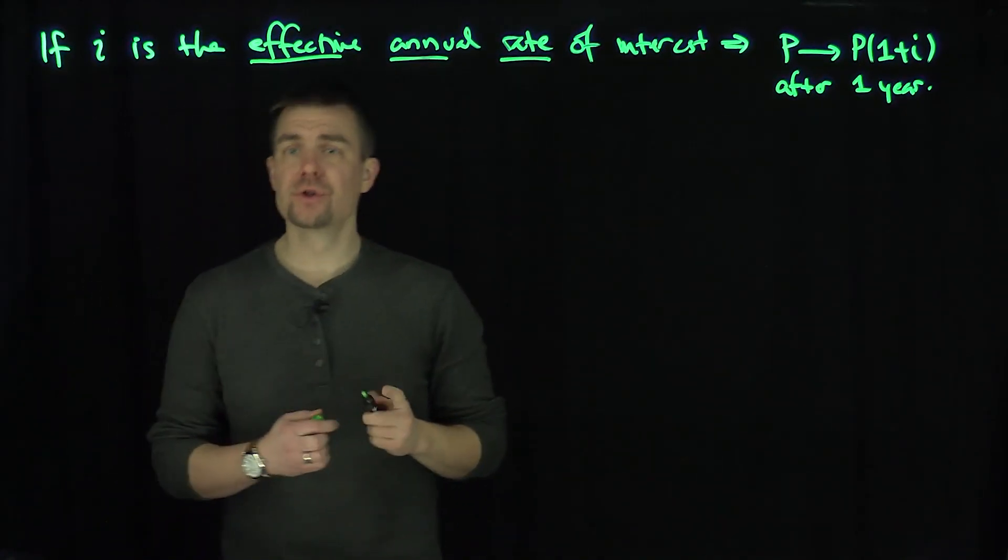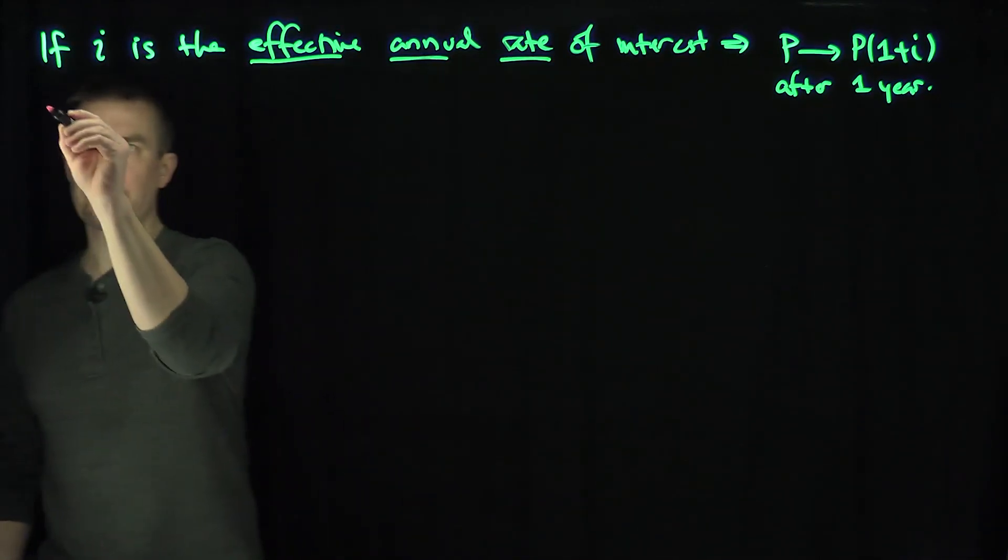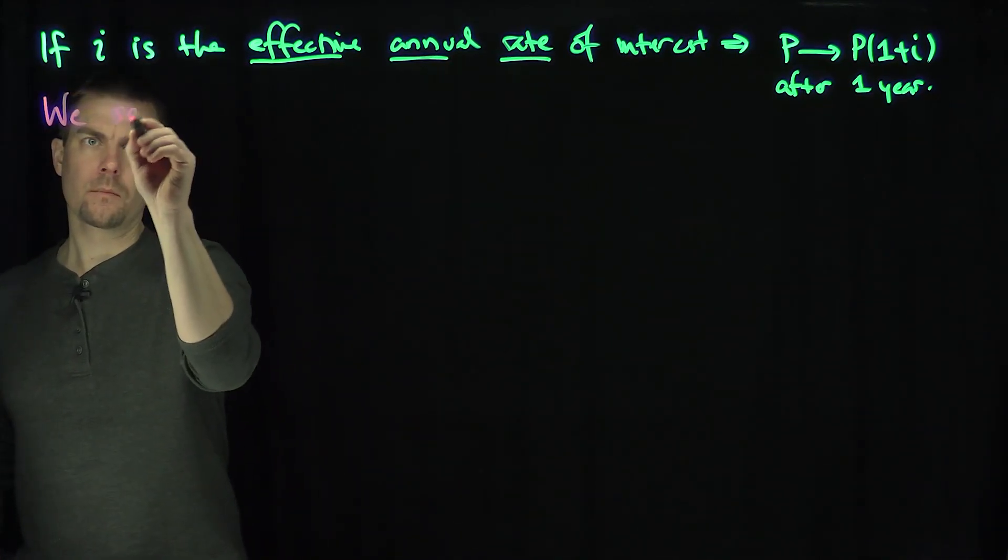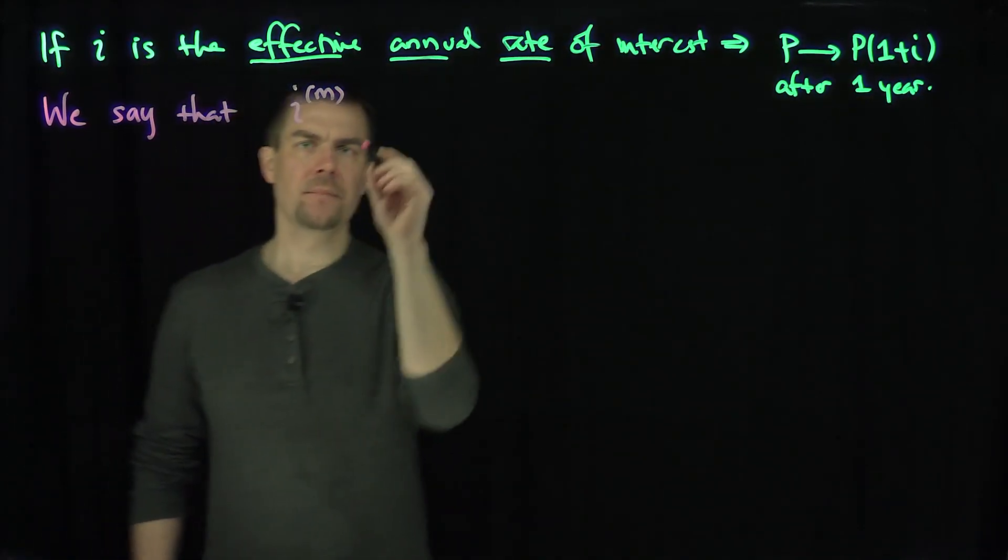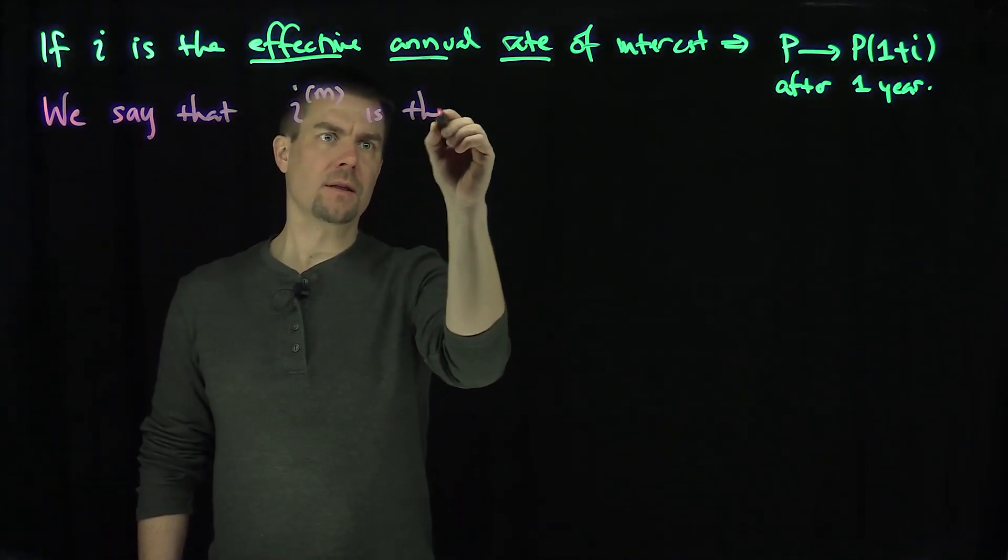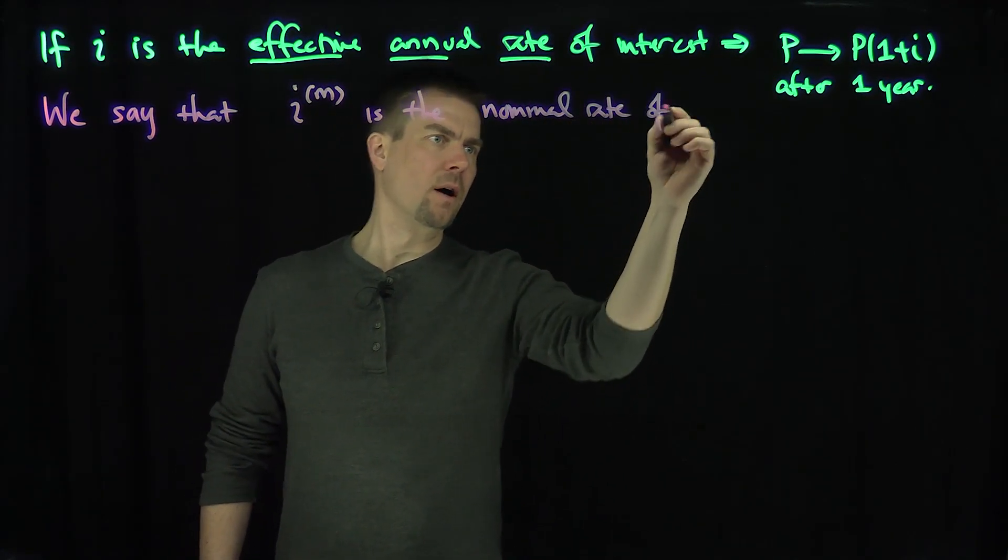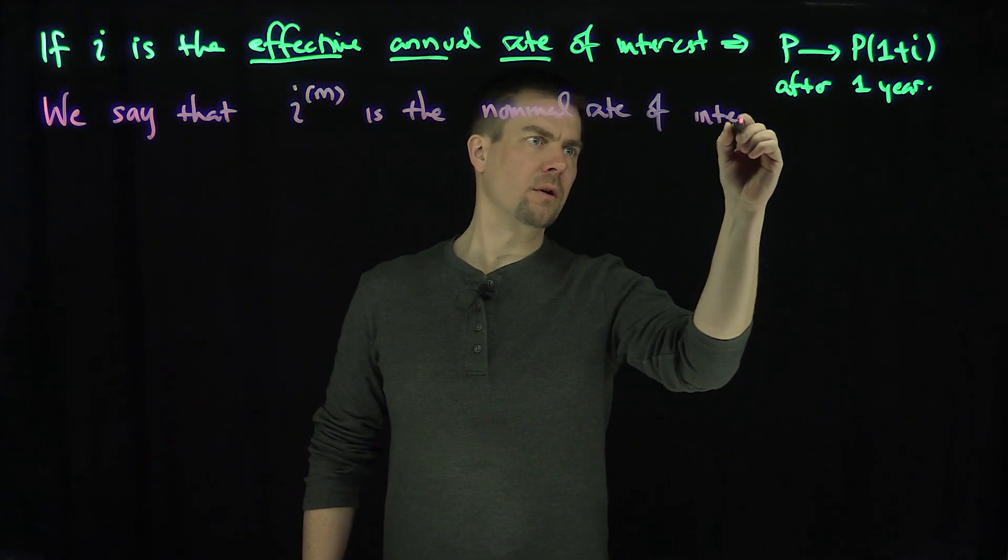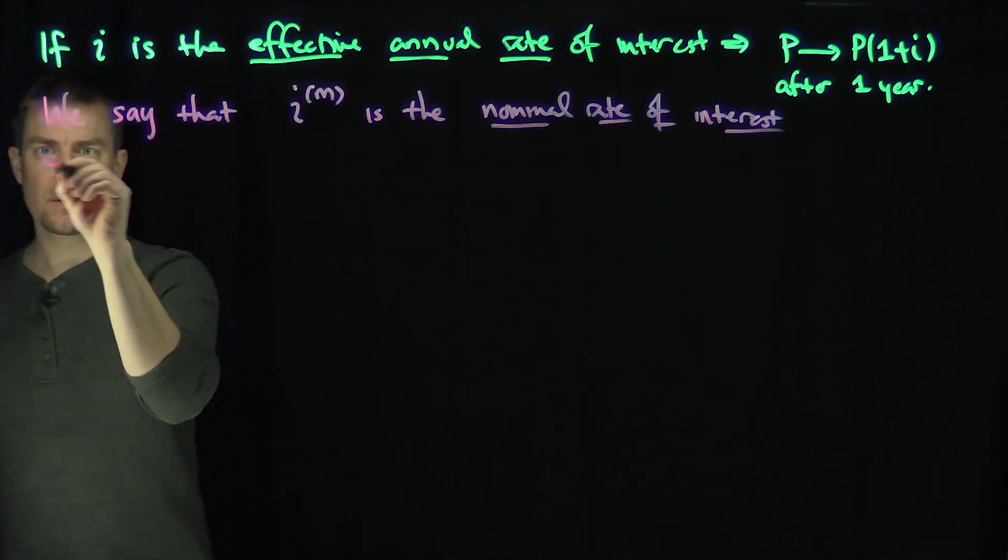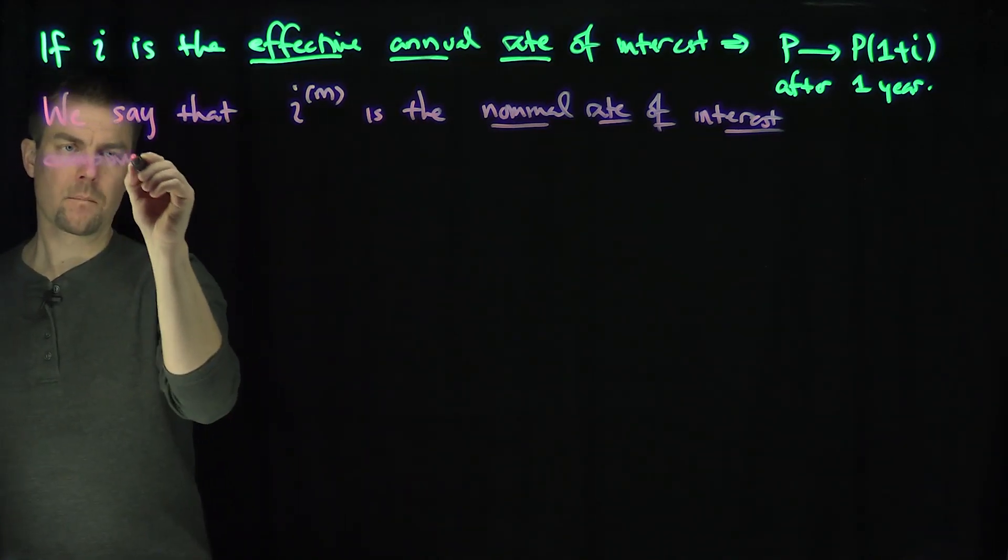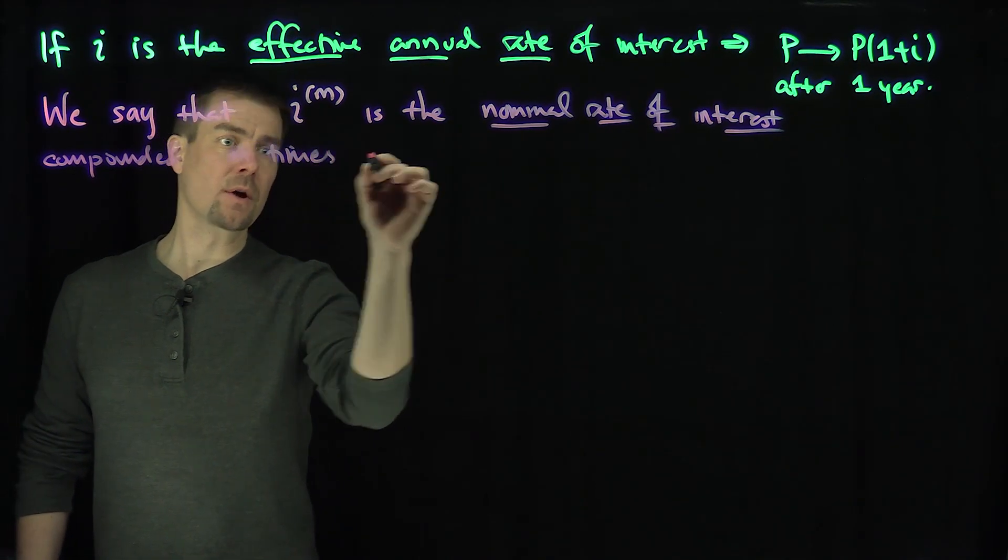Now what I want to do is find the notion of nominal rate of interest. We say that i_m is the nominal rate of interest compounded m times per year.